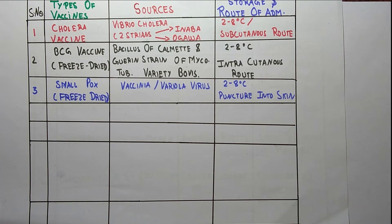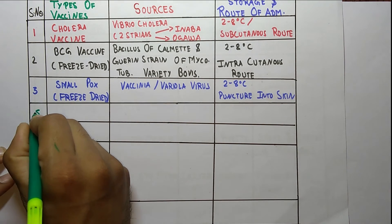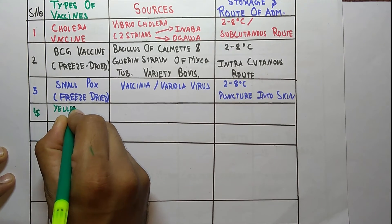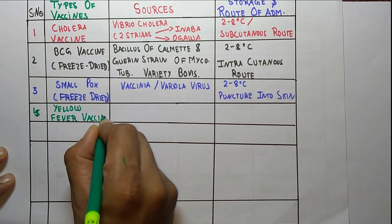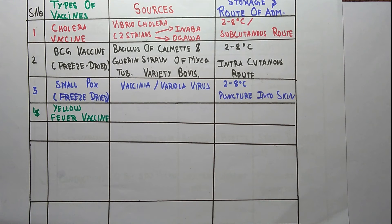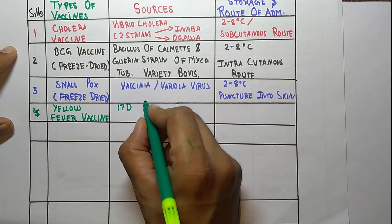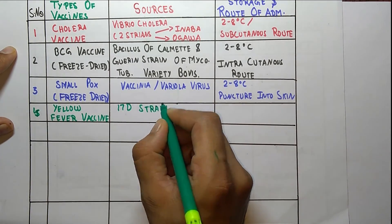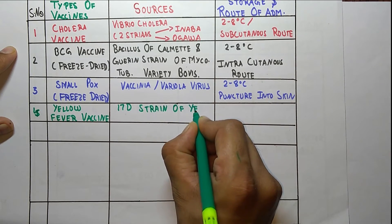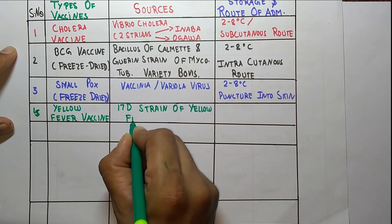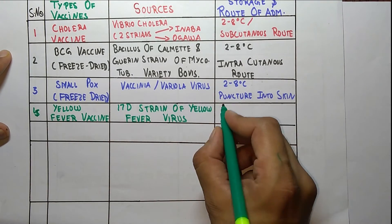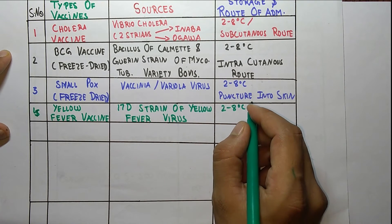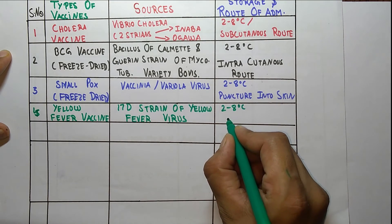The fourth vaccine is the yellow fever vaccine. The source of the yellow fever vaccine is the 17D strain of yellow fever virus. The storage temperature is 2 to 8 degrees Celsius, and it is administered by the subcutaneous route.